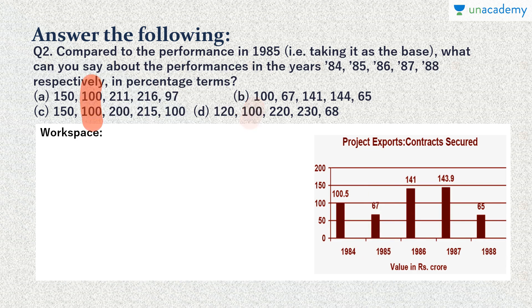We see in three options we have 100% for 1985, and this option doesn't have it, so B is already the incorrect option. We are left with three options. Let us check further. If you can see, in year 1988, it is the only year where the value is lesser than the year 1985. So the value for 1988 should be less than 100% and it should be the only year where the value is less than 100%.